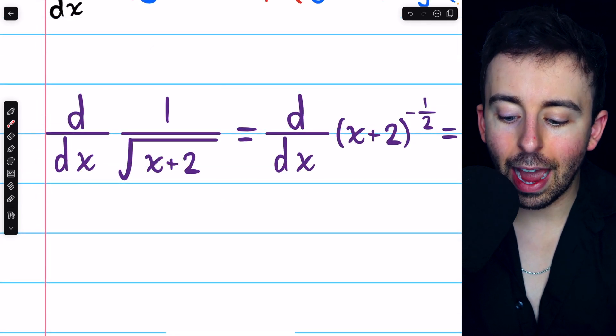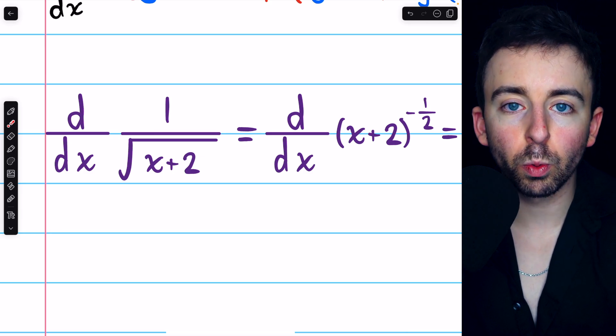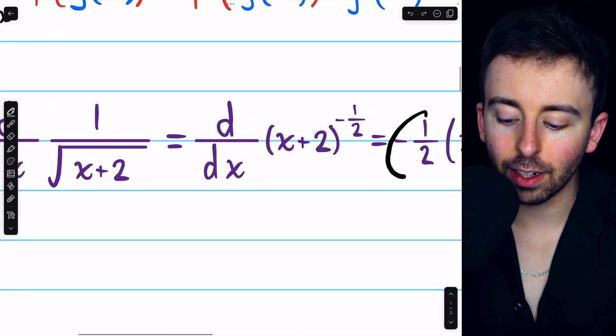To take the derivative of the outside function, which is just a thing to the negative half, we just use the power rule. So, bring that exponent down in front as a factor. So, we have negative one half.